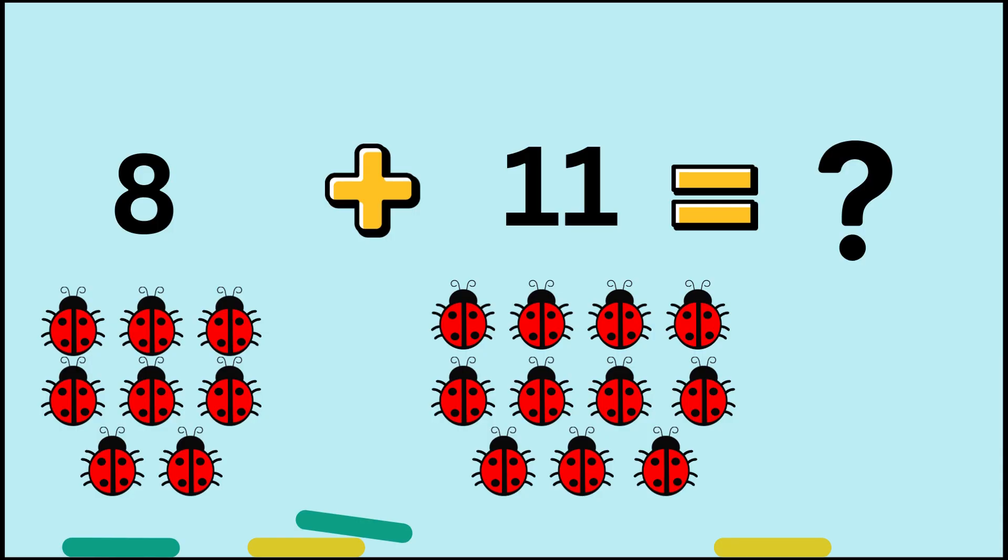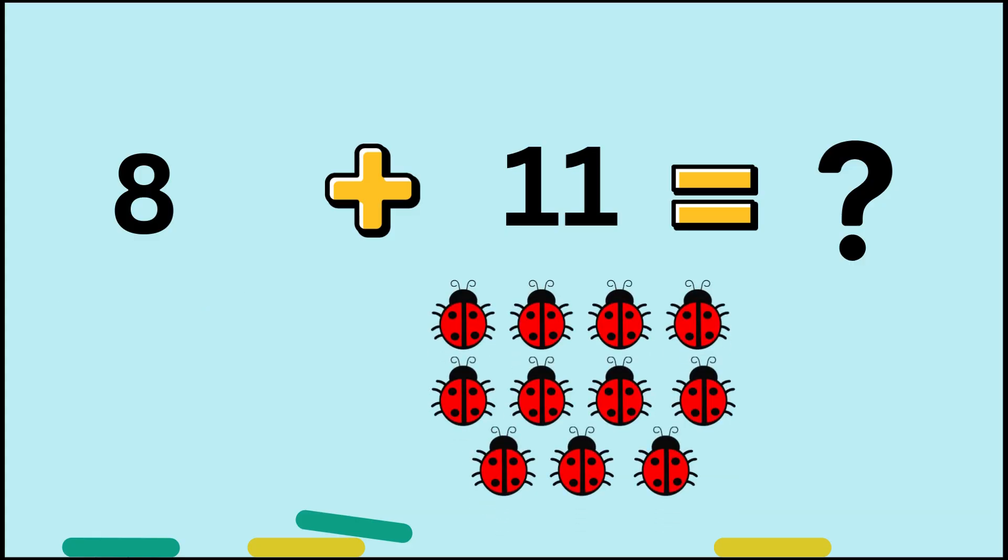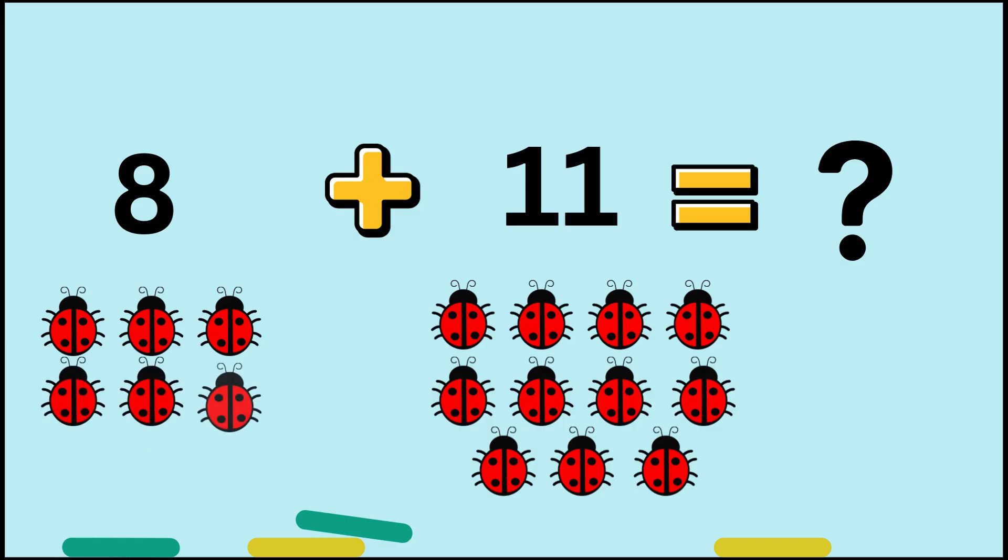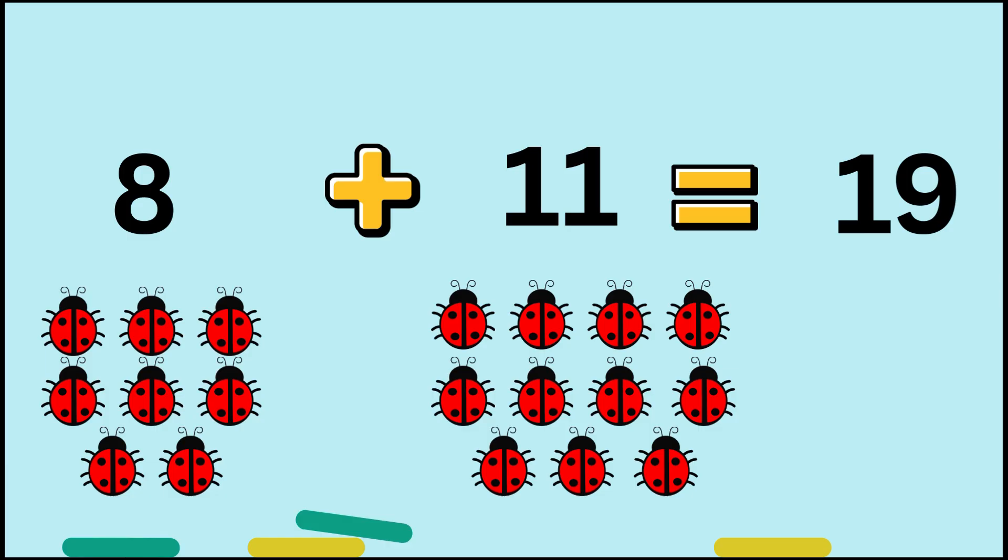And final one. 8 plus 11 equals how many ladybugs? 11 is the bigger number. 12, 13, 14, 15, 16, 17, 18, 19. 8 plus 11 equals 19.